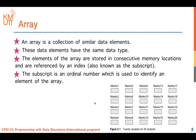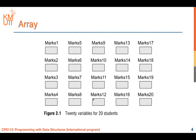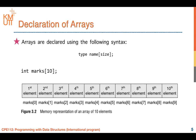For example, if you want to define 20 variables for the scores of 20 students, without an array you would have to name them mark1, marks2, marks3, mark4, mark5, and so on. This is possible in C programming but it's not efficient, so you would define them as an array instead.